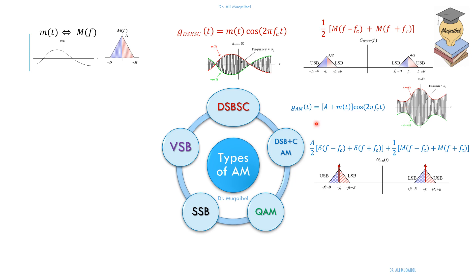Now, how much A should we add? We should just make sure that the message after the addition is positive. So we have to make sure that A is greater than M(b). We also define the modulation index, which equals to M(b) divided by A, and now the modulation index has to be between 0 and 1, because we want the added A to be greater than M(b). Otherwise, we get what we call overmodulation.